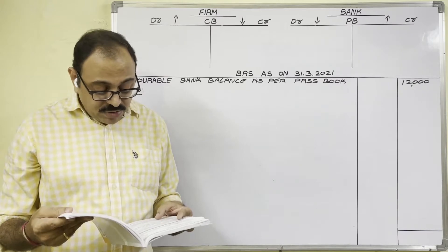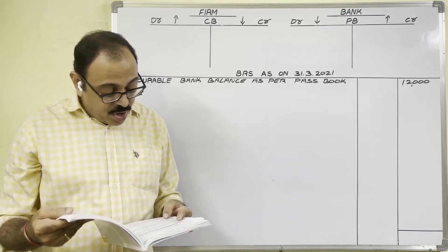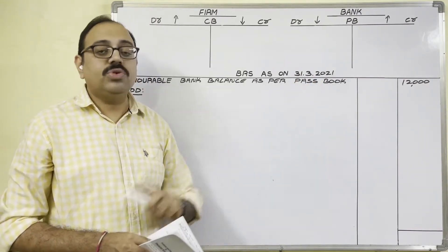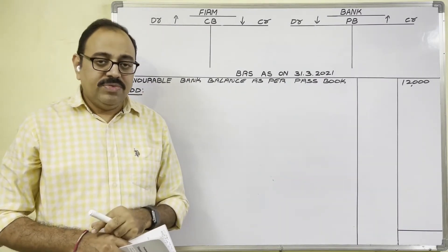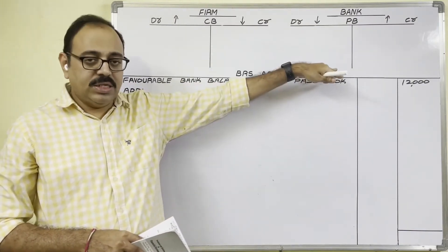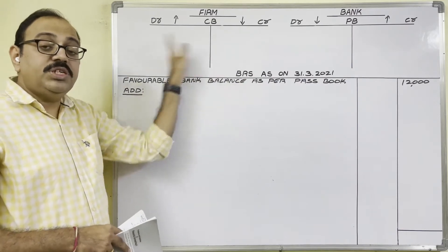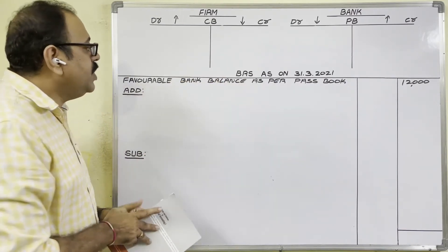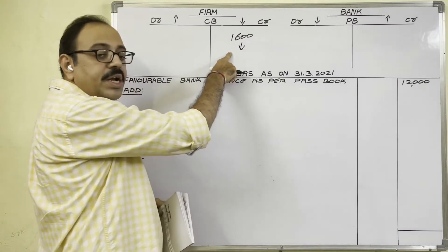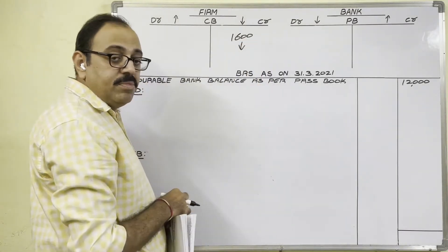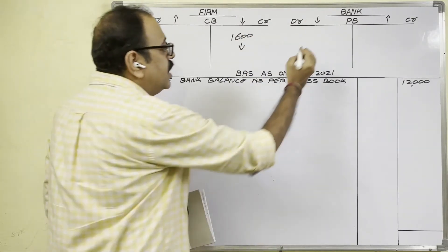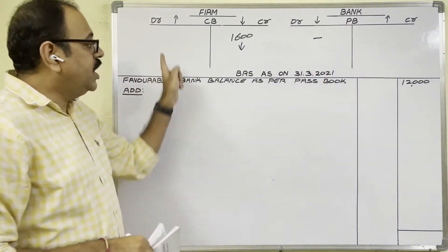Before 31st March 2021, the firm issued cheques of 1,600 rupees to customers, but they have not presented them for payment. The firm assumes the customers go to the bank and take the money, so the bank balance decreases. Decrease means credit side — the firm credited 1,600 rupees in the cashbook. In the cashbook, credited means in the passbook it should be debited. But the customers didn't go to the bank and didn't present the cheque, so nothing was debited in the passbook. There is a difference.